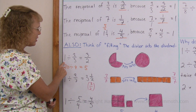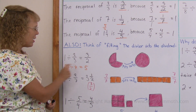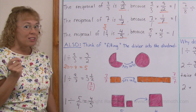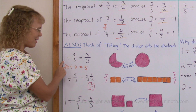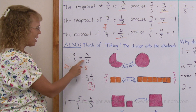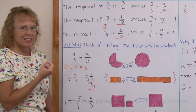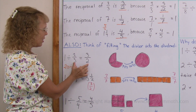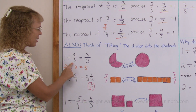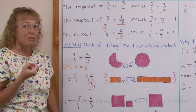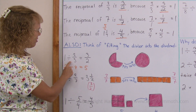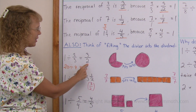This division is 1 divided by 2 thirds, and it equals 3 halves. How do I know that? I know it because these two, when multiplied, give me 1. 3 halves times 2 thirds equals 1 — these two are reciprocal numbers. So when you multiply them you get 1. In division, 1 divided by a fraction, the answer is its reciprocal number.